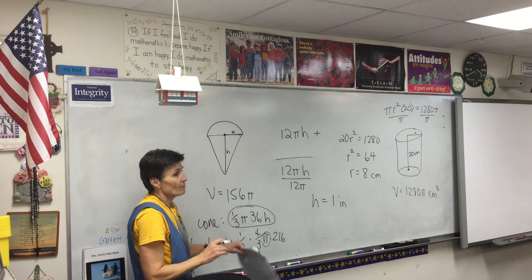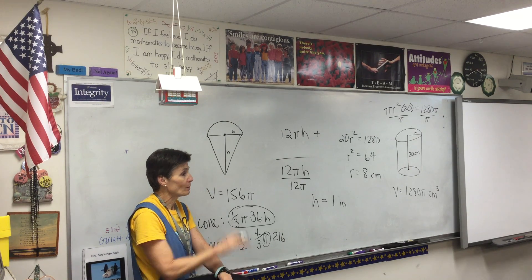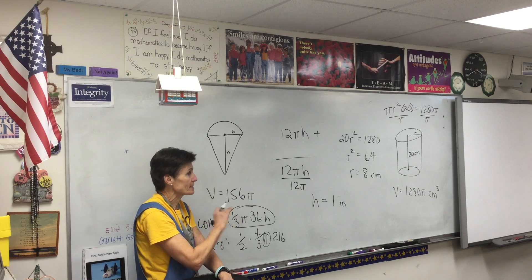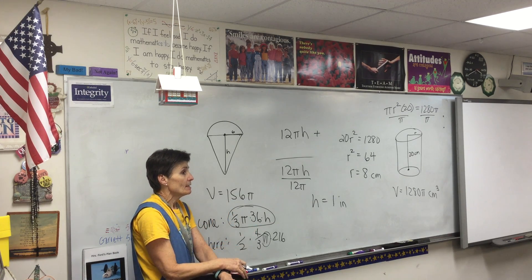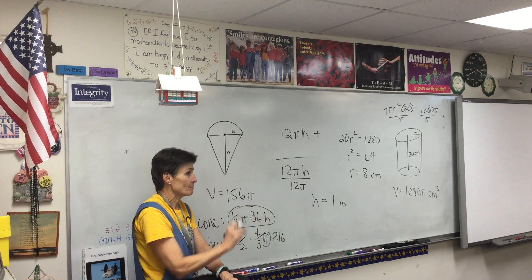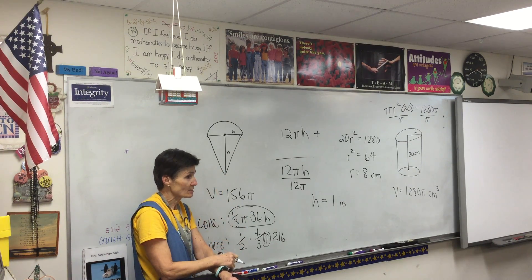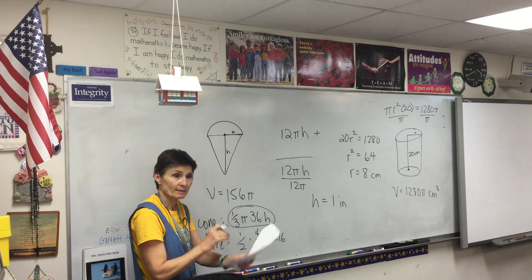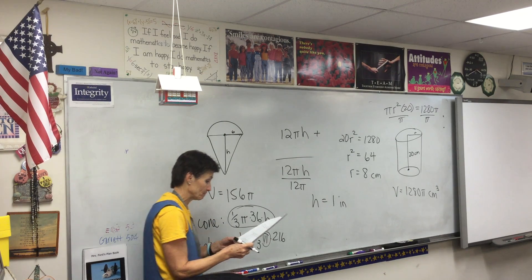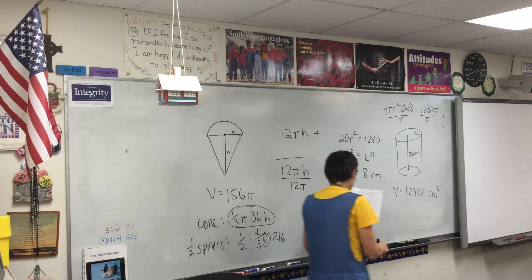Remember, the dimensions of the figure are always just plain inches, centimeters, feet, whatever. Area is squared, volume is cubed. But the regular dimensions—length, width, radius—are just the plain inches, feet, or whatever.